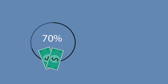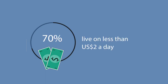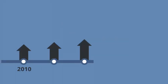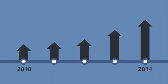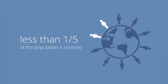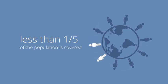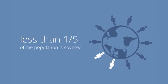In low-income countries, around 70% of the population lives on less than $2 per day. To tackle this challenge, between 2010 and 2014, the number of social protection programs in developing regions almost doubled, with every country having at least one social assistance program in place. Yet less than one-fifth of the population in developing countries is covered by social protection programs.